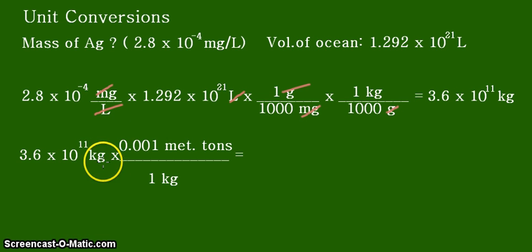Let us see the cancellation of the unit kilogram, and we are left with the unit metric tons. Let us solve that. The answer is 3.6 times 10 to the power of positive 8 metric tons.